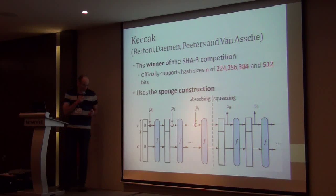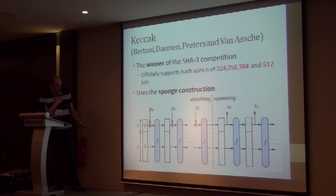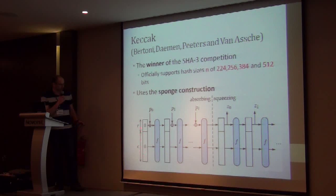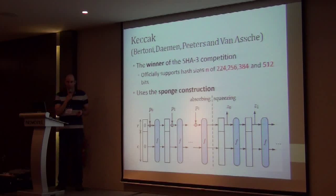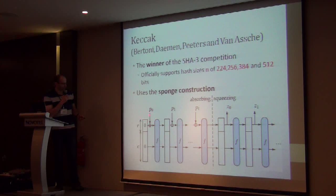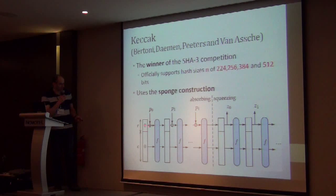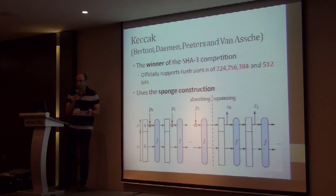The state is divided into two parts: the first part of R bits and the second part of C bits. The state is initialized to zero. In our attack we have only one message block, so we absorb the message block into the R bits — the message block is of size R bits — then apply some function F, and finally truncate the first N bits of the state as output. This is the sponge construction applied to one message block.